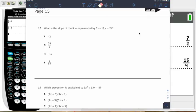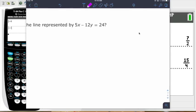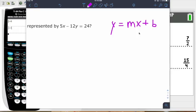Alright, so number 15 here. What is the slope of the line represented by 5x minus 12y equals 24? They are asking for the slope. Now, for the slope, the slope is always the m when an equation is in slope-intercept form or y equals mx plus b form.